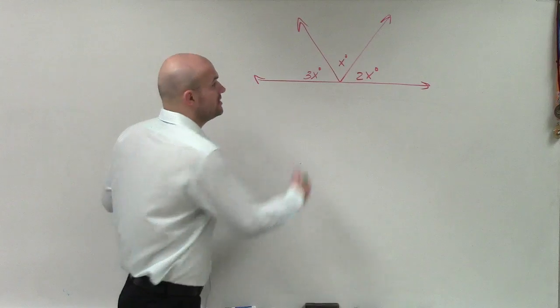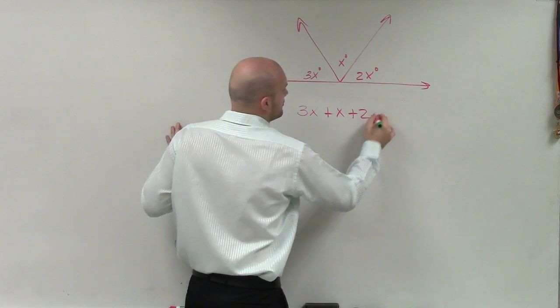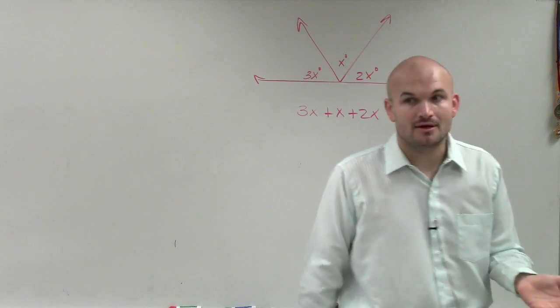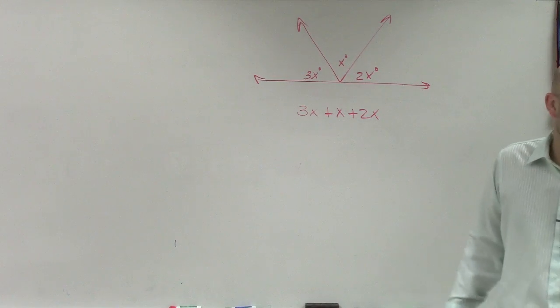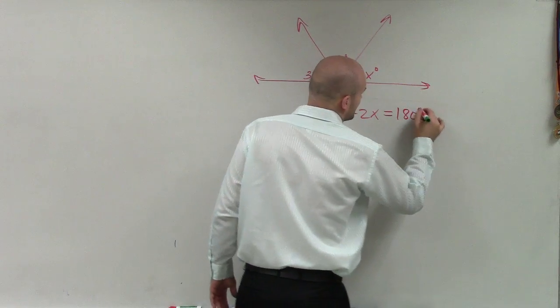Therefore, if I want to solve for x, the only thing I know right now is that 3x plus x plus 2x make up a straight angle. And Philip, do you remember what the measurement of a straight angle was? 180 degrees. So that equals 180 degrees.